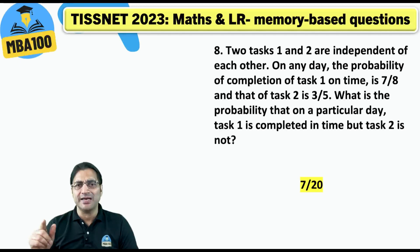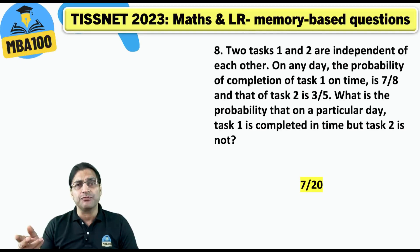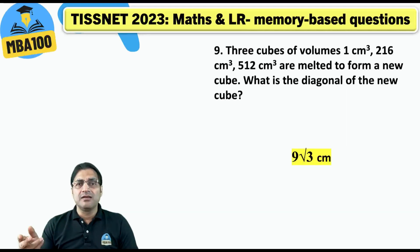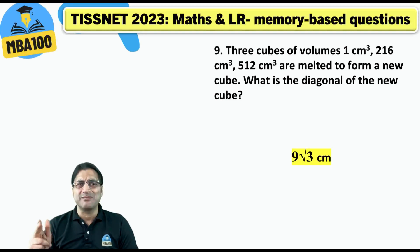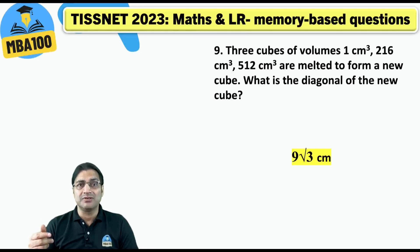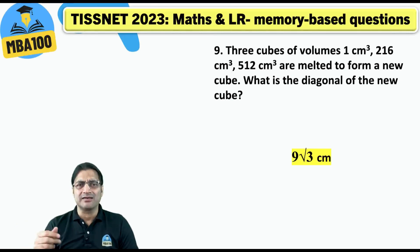It was very simple: 7/8 multiplied by 2/5 — that is all that you needed to do. Here the answer is 9 root 3, because 512 plus 2 is 16 plus 1, giving you 729. So the edge of the bigger cube is 9 centimeters, making the diagonal 9√3 centimeters.